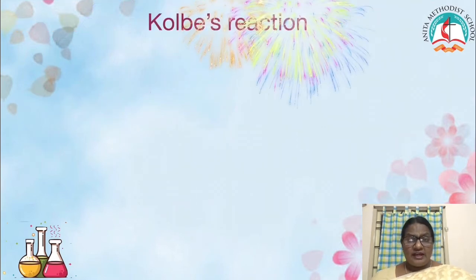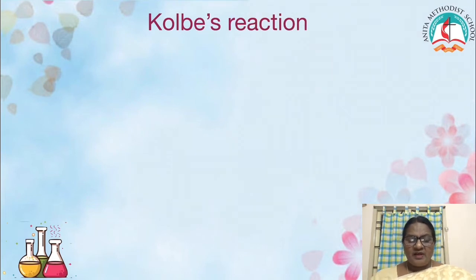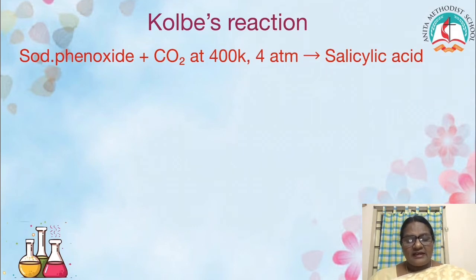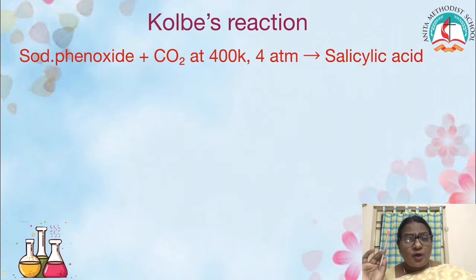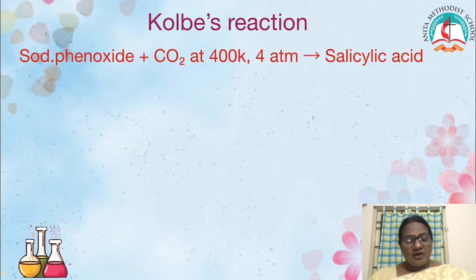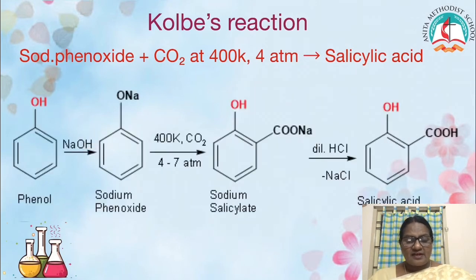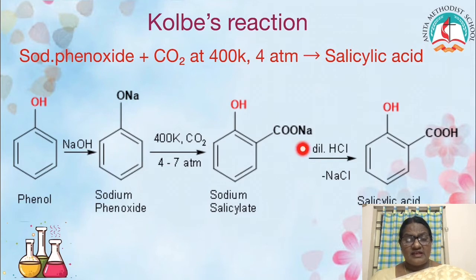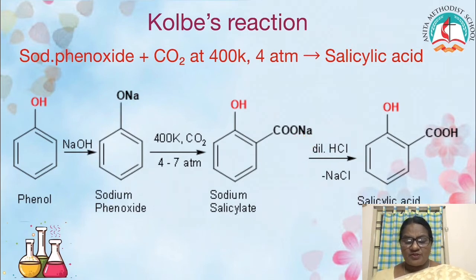Now, we are going to see some important named reactions of phenol. The first is Kolbe's reaction. Sodium phenoxide — not phenol, but sodium phenoxide — reacts with carbon dioxide at 400 Kelvin and 4 atmospheres to give salicylic acid. In the first step, phenol reacts with sodium hydroxide; the hydrogen is replaced by sodium to give sodium phenoxide. This sodium phenoxide reacts with CO2 at 400 Kelvin to give an intermediate product, sodium salicylate. Sodium salicylate on hydrolysis in the presence of HCl gives salicylic acid, which is important in the preparation of aspirin and paracetamol.